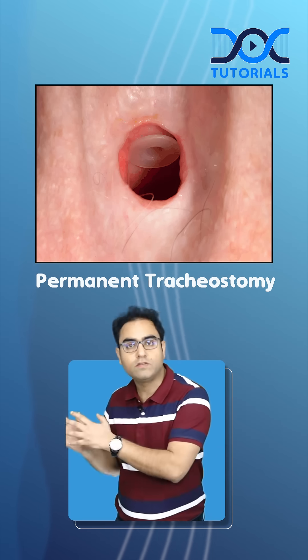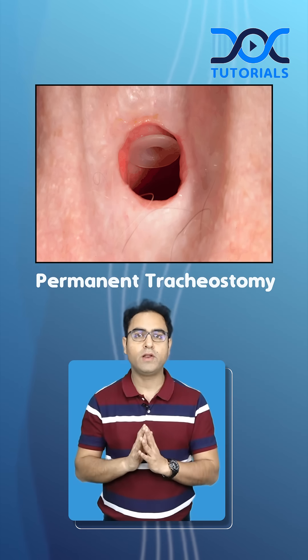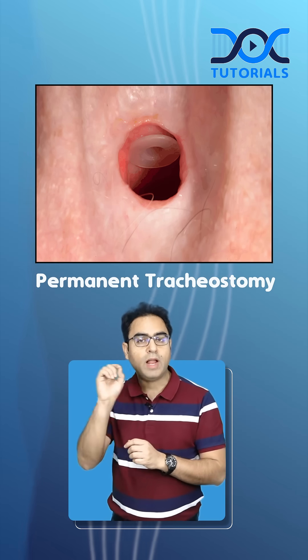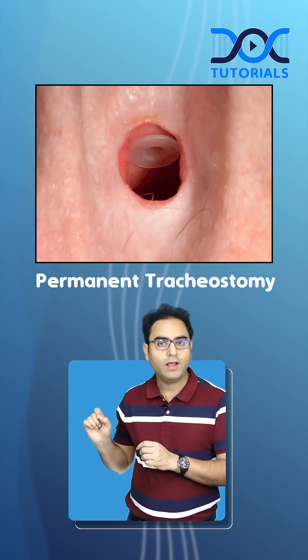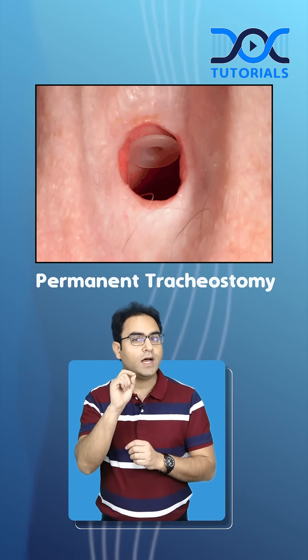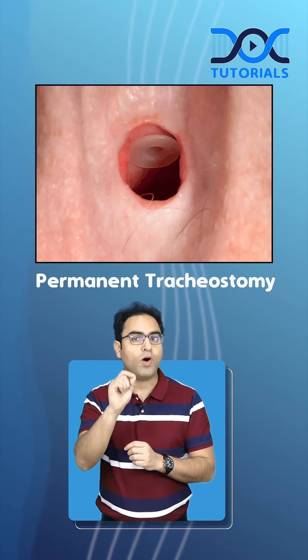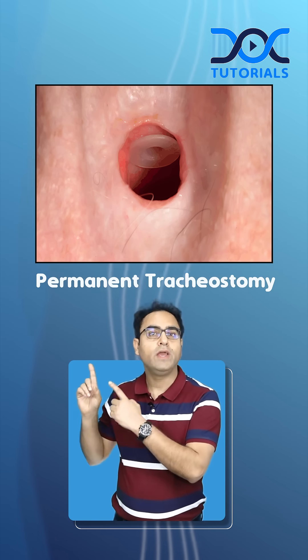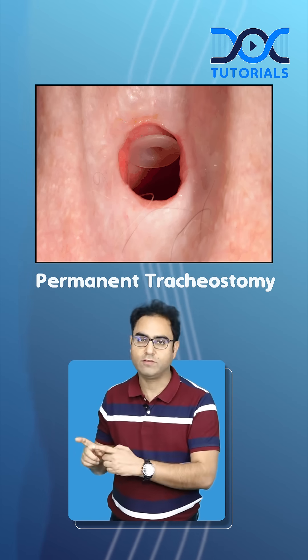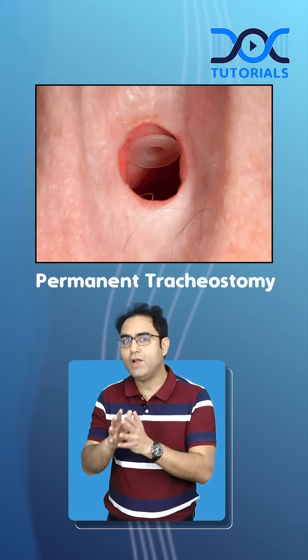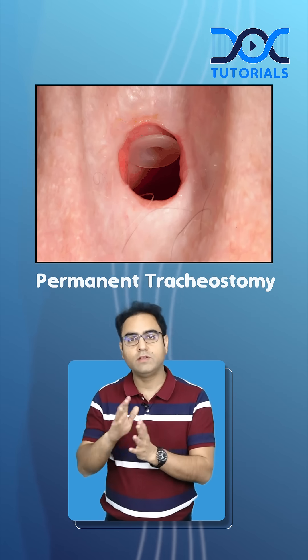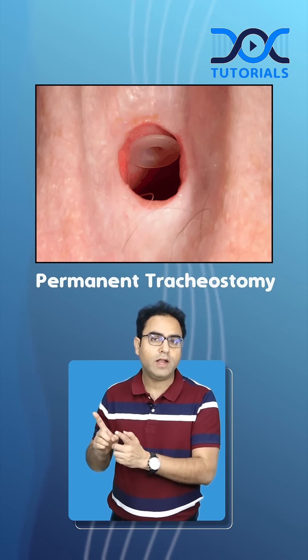Please look through this permanent tracheostomy. Can you see a plastic ring-like thing on the posterior wall of the trachea? When you see this, the name of this device is the tracheoesophageal puncture device, because right behind the trachea is the esophagus. One end of this device is in the esophagus, and the other end, which you are seeing from here, is the tracheal end.